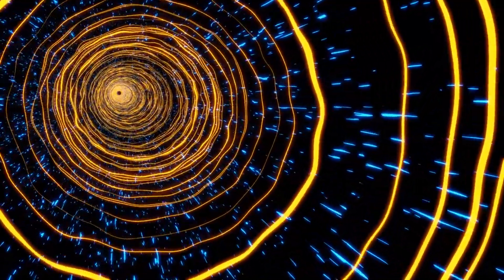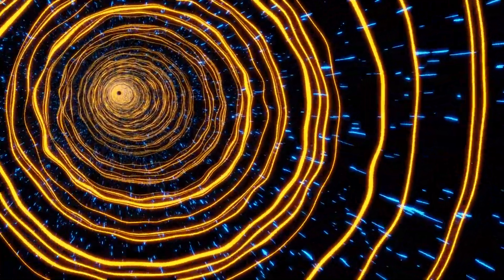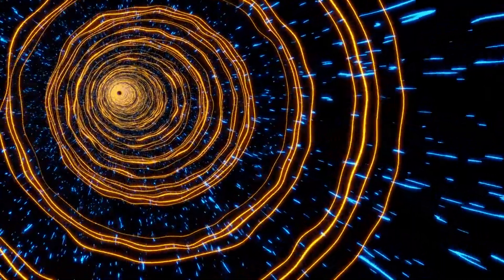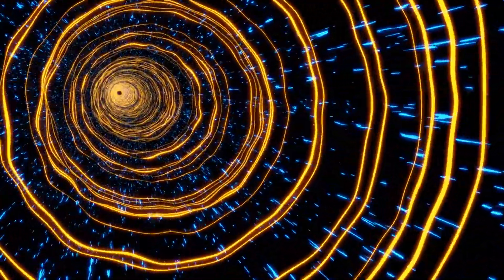Quantum superposition is the unique ability of particles to exist in multiple states simultaneously, at least until they are measured. It's as if a coin, when flipped, was simultaneously both heads and tails until you looked at it. This isn't a perfect analogy, but it offers a rudimentary picture of what quantum superposition is like.